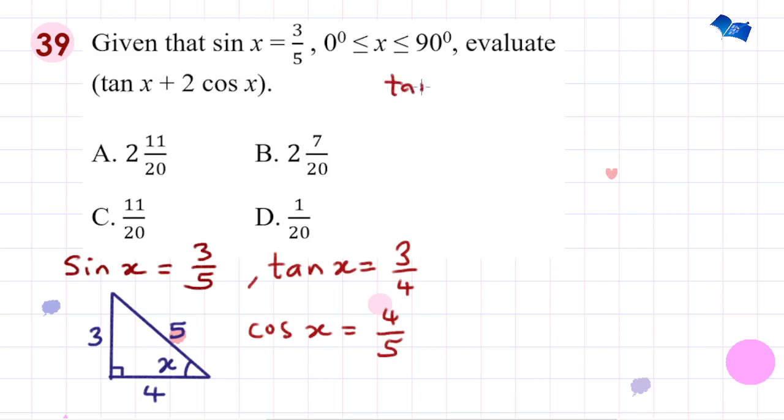So tan x plus 2 cos x is equal to tan x, which is 3 over 4, plus 2 times cos x, which is 4 over 5. So we would have 3 over 4 plus 2 times 4 is 8, we have 8 over 5.